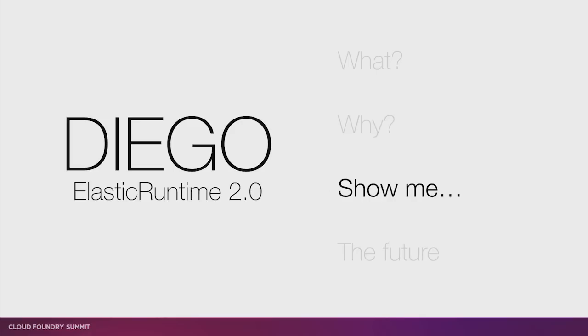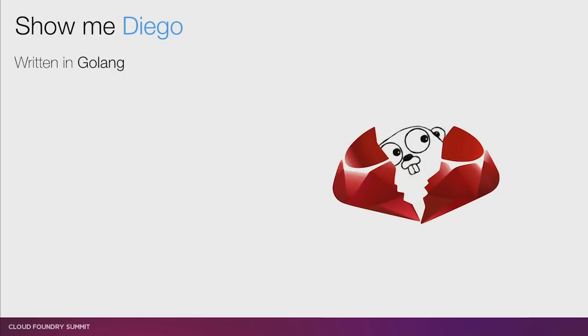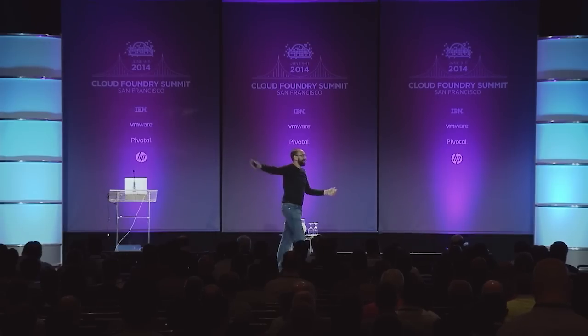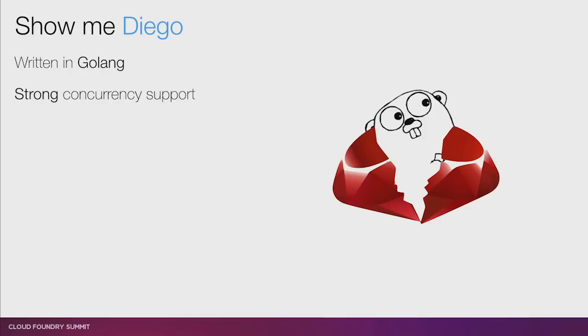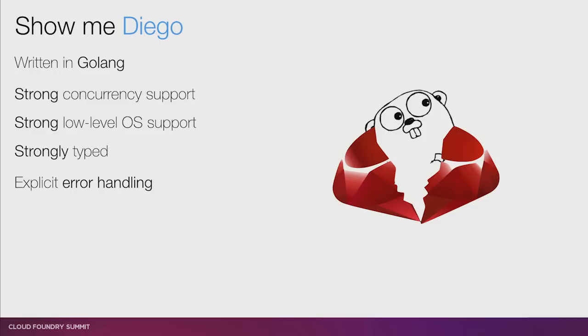So let me show you Diego, and in particular the aspects that are tailored to solve these problems. First, let's tackle Ruby. We switch to Go — we're writing the whole thing in Golang. Why? Because it has strong concurrency support, strong low-level OS support, it's strongly typed, it forces you to think about error handling, and most of all, it promotes developer discipline. Go really just wants you to be disciplined — it makes it a lot harder to be lazy, and this is good.